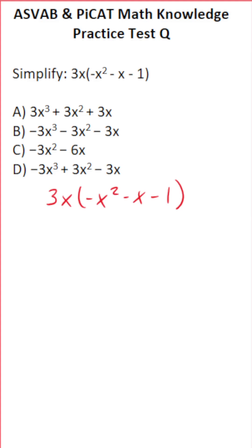The first thing we have to do is distribute this 3x here, here, and here. Distribute just means multiply. So to start, we have 3x times negative x squared. That's going to be negative 3.